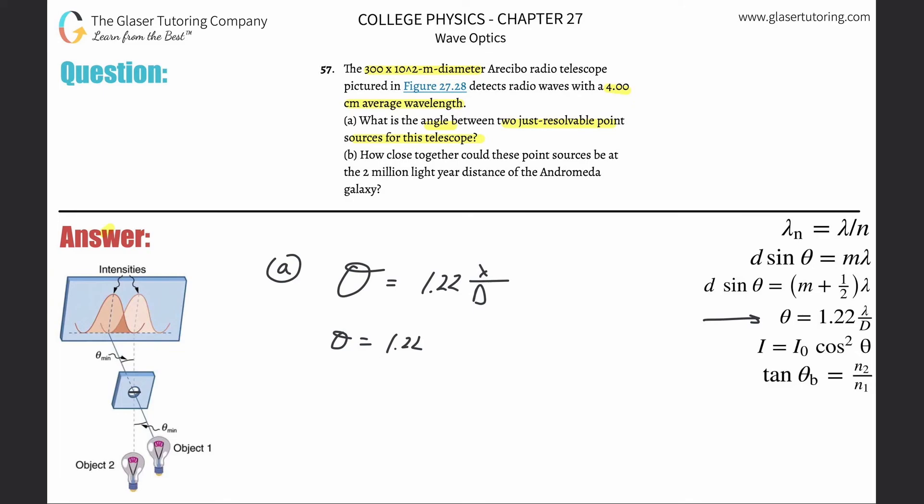Now to solve this, it's very straightforward because we have everything. It's four centimeters wavelength, so that's four times 10 to the minus 2 meters. Divide it by the diameter, which is 300 times 10 to the 2 meters.